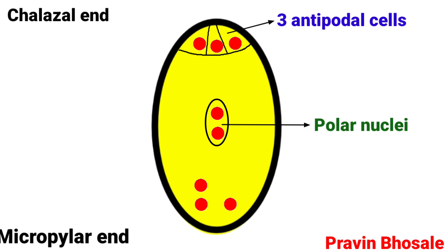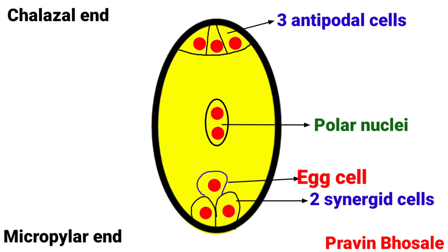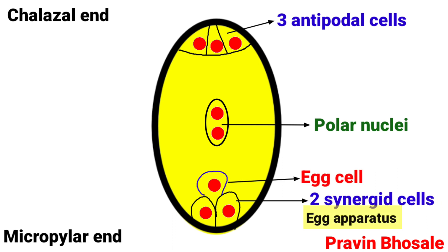At the micropylar end, two synergid cells are formed and one egg cell is formed. The egg cell plus synergid cells together are called the egg apparatus.